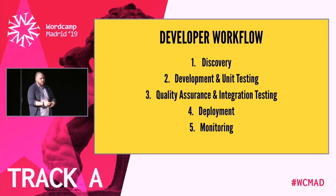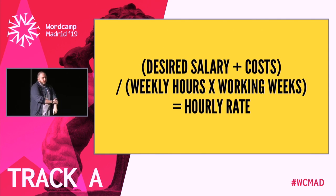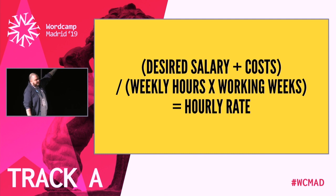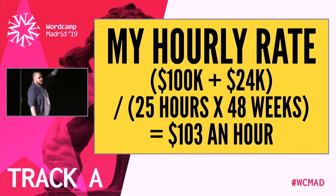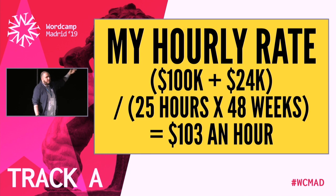Let's price via developer workflow. Here's a quick salary calculation: desired annual salary plus costs, divided by weekly hours times working weeks. Living in New York City, I need $100,000 just to afford a studio apartment, plus $24,000 for medical costs and hardware, working only 25 hours a week — because I need another 15 hours to go and sell. So I have to charge $103 per hour.